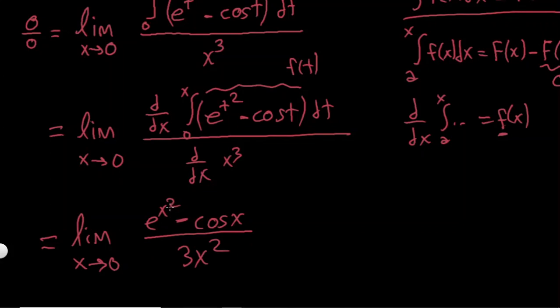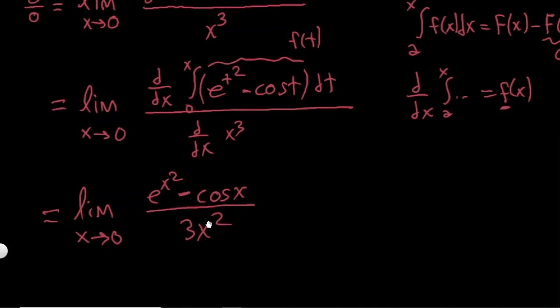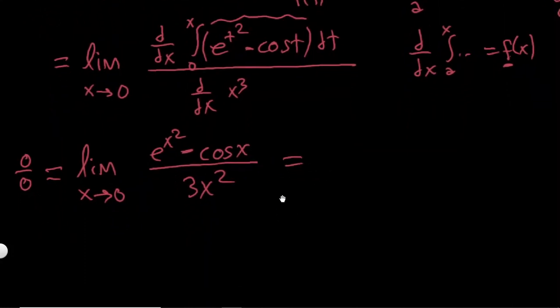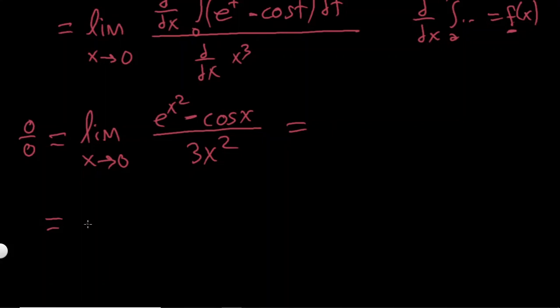And now if I put x is equal to 0, it's again 0 over 0, so I can again use L'Hopital. So I can use L'Hopital, and so it's going to be, let's write it here, limit as x goes to 0.